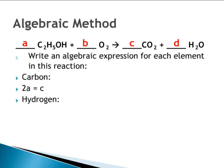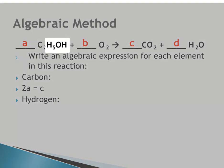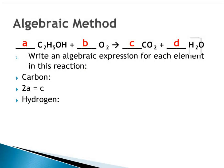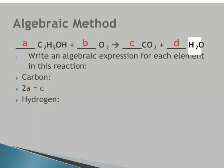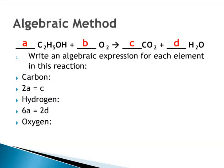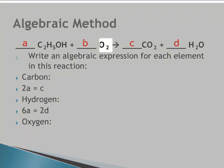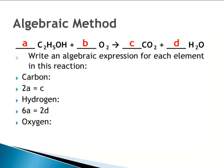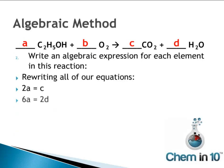With regards to hydrogen, there are six hydrogens in C2H5OH (listed in two different places in that compound), giving 6A, and two hydrogens in water, so 6A equals 2D. For oxygen: one oxygen in A, two oxygens in B, two oxygens in C, and one oxygen in D. So A plus 2B equals 2C plus D.